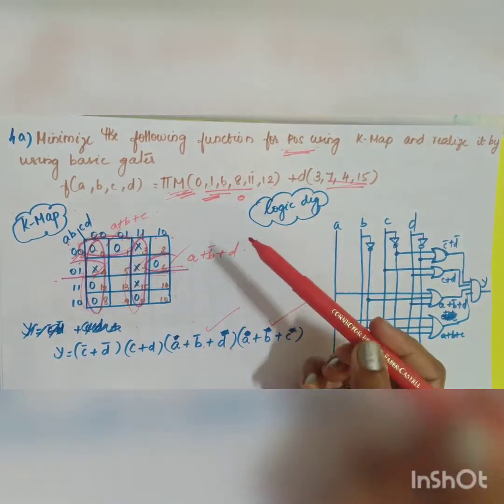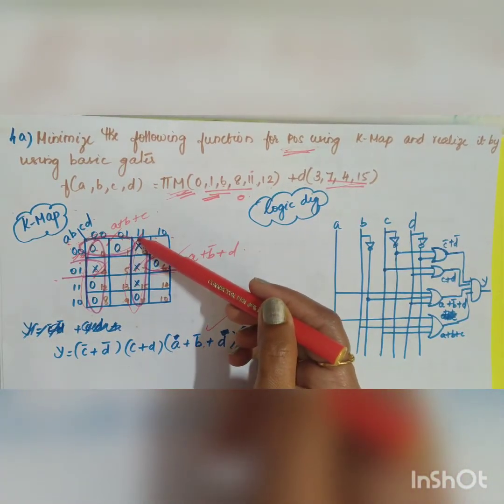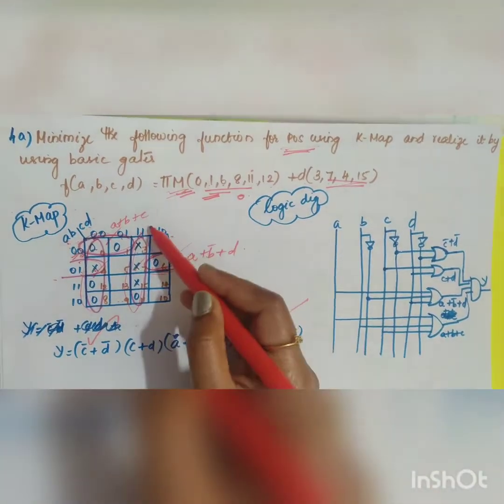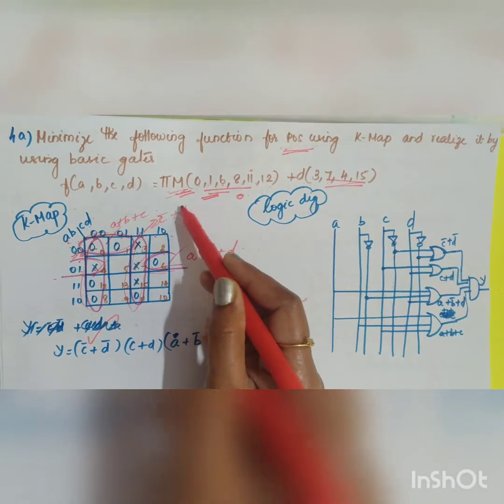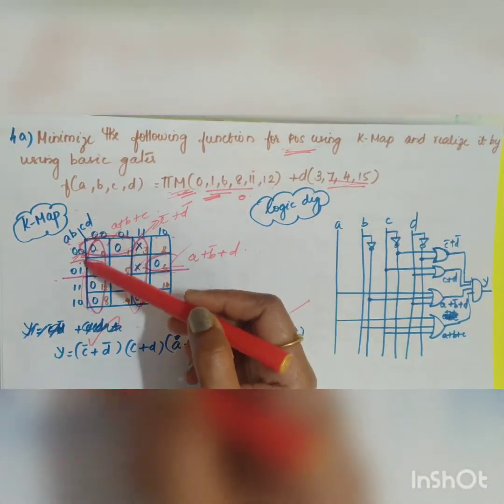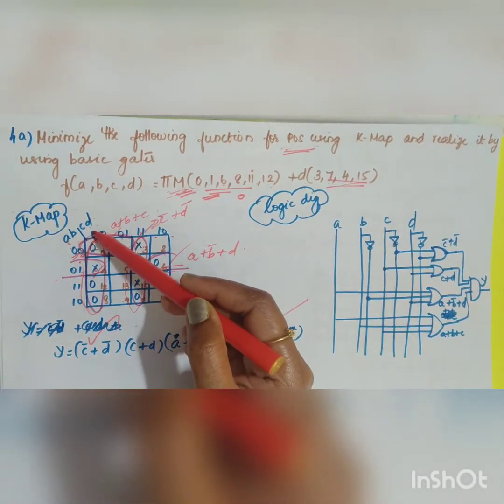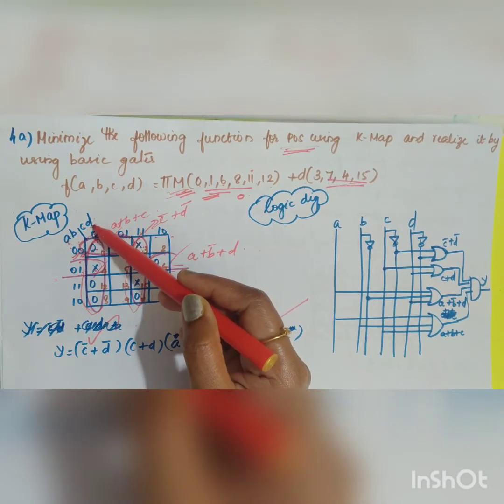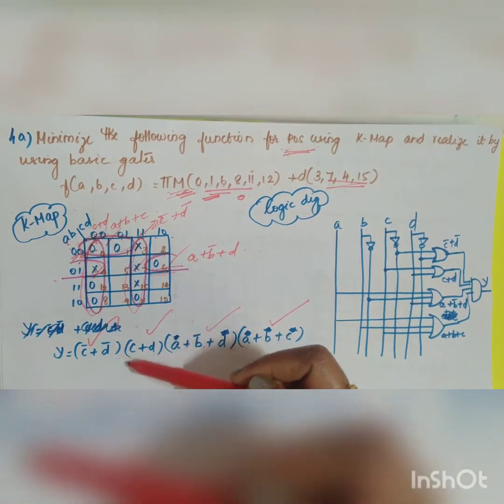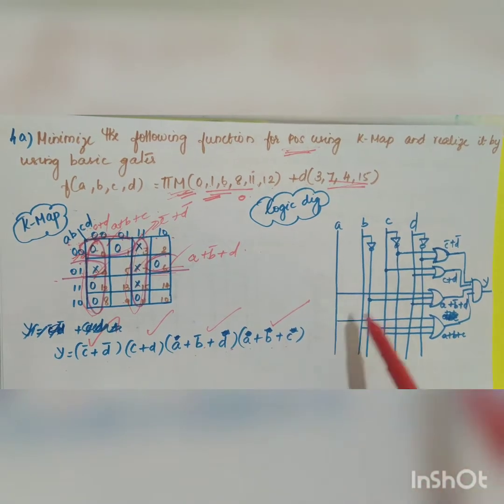What will be your third value into what is your this we have left. What is the value here it is c d. It will be c bar plus d bar. C bar plus d bar and what is your fourth one which is left back. It is here. These four. Here it is c bar d bar. Here you will be getting c plus d. You have got y is equal to c bar plus d bar c plus d into a plus b bar plus d into a plus b plus c.